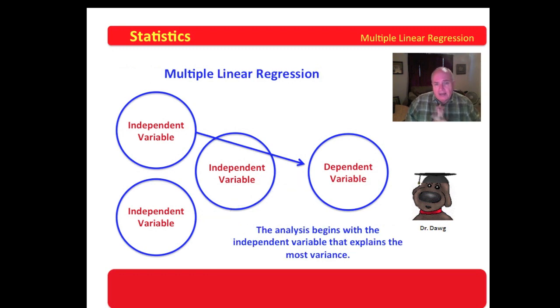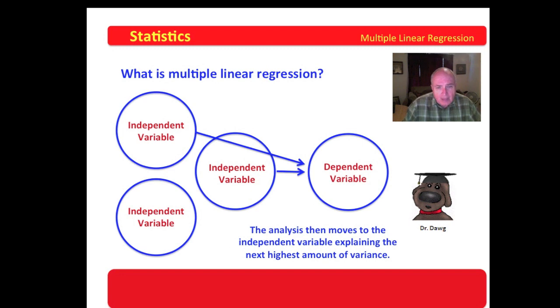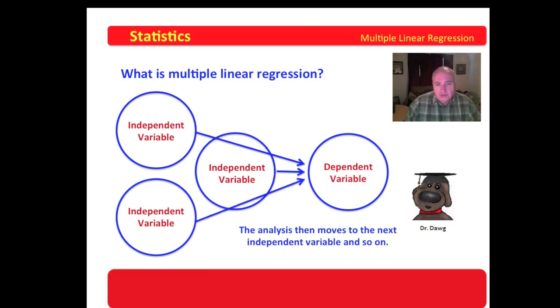It will identify the one that explains the most variance. Once it identifies the independent variable that is explaining the most variance in the dependent variable, then it will more or less freeze that independent variable to examine the other two independent variables and identify that independent variable which explains the next most variance in the dependent variable. And this process goes on and on.